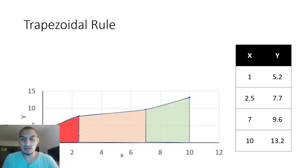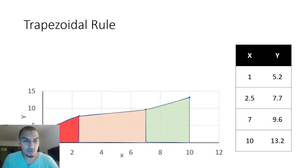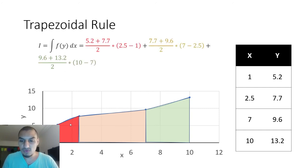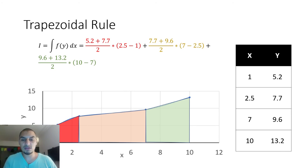The area of a trapezoid is the middle base multiplied by the height. You take the two parallel sides and get the average — so it's (5.2 + 7.7) / 2, multiplied by the height, which is the difference in x. You do this for the first trapezoid, add the area of the second, and the area of the third — that's all you need to do.